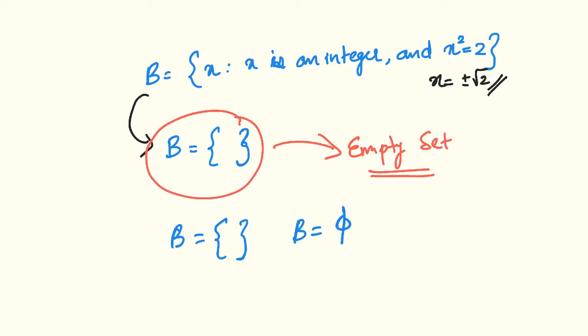Phi is a Greek letter representing the empty set. The symbol phi means the set has no elements — it is an empty set.